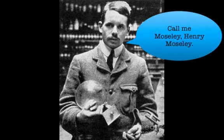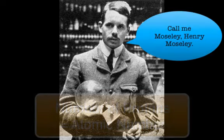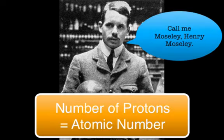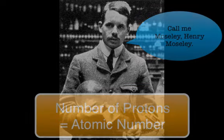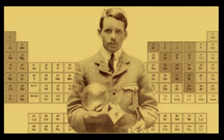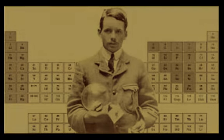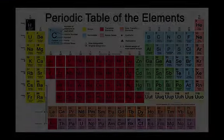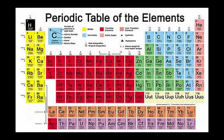From the results of his experiments, Moseley was able to determine the number of protons — the atomic number — in an atom. When he rearranged elements by atomic number, every element fell into its proper place in an improved periodic table. Since 1914, more elements have been discovered, and each discovery has supported the periodic law, considered to be the basis of the periodic table.